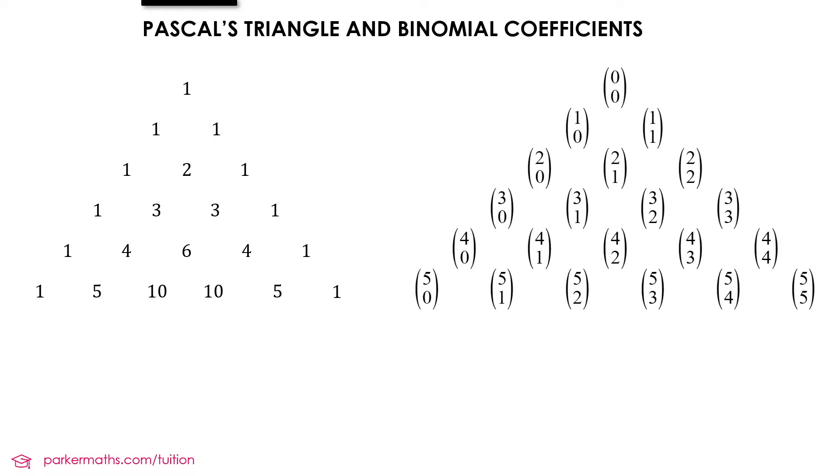So the way this notation works is that inside each pair of brackets, the top value refers to the row in the triangle we're looking for, and the bottom value refers to the entry we're looking for.